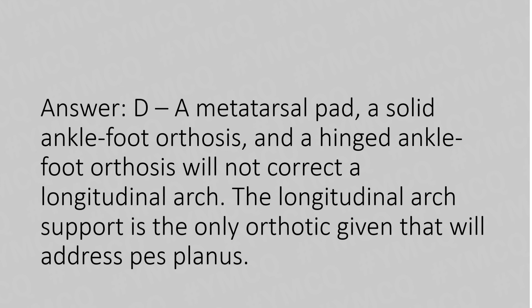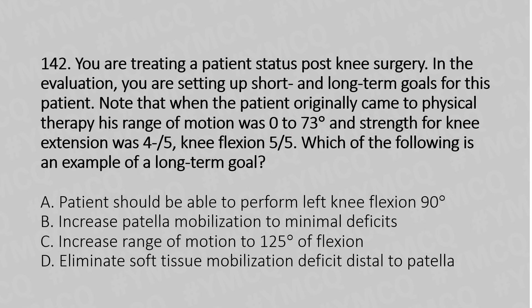Now let's move to question number 142. You are treating a patient status post-knee surgery. In the evaluation, you are setting up short and long-term goals for this patient. Note that when the patient originally came to physical therapy, his range of motion was 0 to 73 degrees, strength of knee extension was 4 out of 5, and knee flexion was 5 out of 5. Which of the following is an example of a long-term goal? Option A: